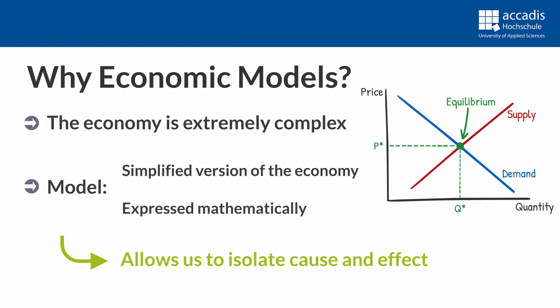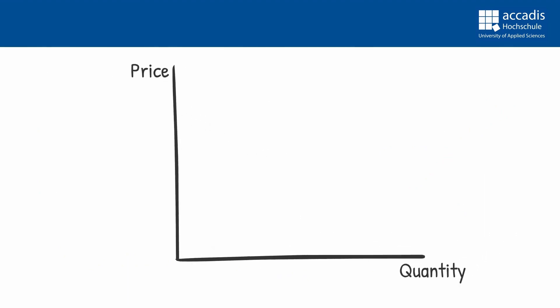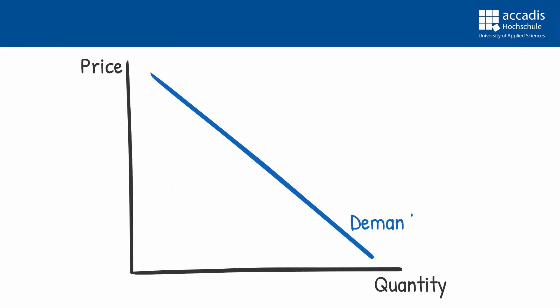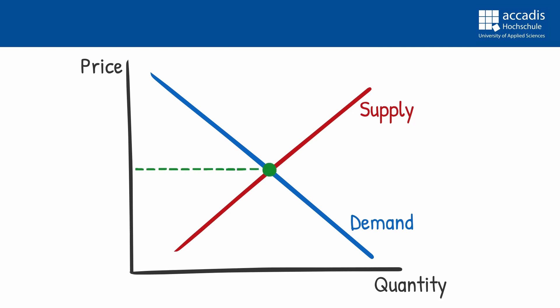Now let's delve into our model of the market mechanism. We have a demand curve that represents our buyers' willingness to pay and shows how the quantity demanded responds to changes in price. Similarly, we have a supply curve that illustrates how the quantity supplied responds to changes in price. In an ideal scenario, without external interventions, the market will always reach equilibrium - the point where supply equals demand - resulting in neither a shortage nor a surplus.